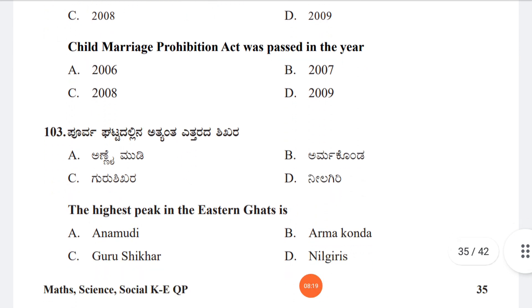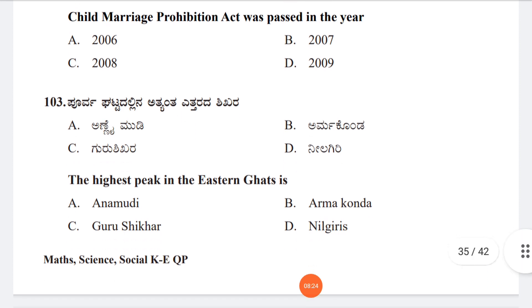Question 103: The highest peak in the Eastern Ghats is Option A: Anaimudi, Option B: Arma Konda, Option C: Guru Shikhar, Option D: Nilgiris. The answer is Option B, Arma Konda.